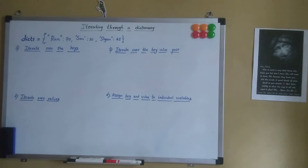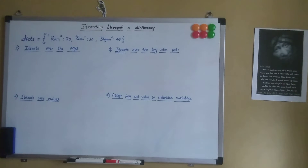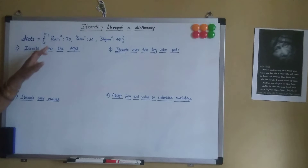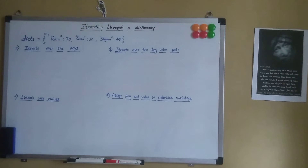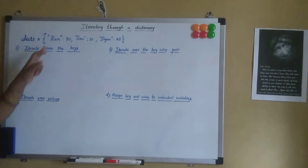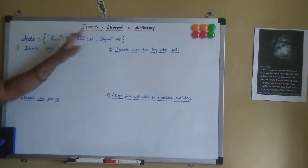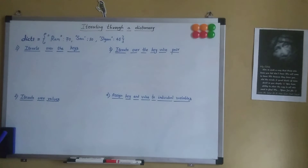We all know that dictionary is an important data type in Python programming language. It has key-value pairs, and each key-value pair in a dictionary is called an item. So today let's see how we can iterate through a dictionary.